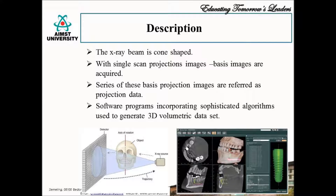The shape of the X-ray beam is that of a cone. As in CT scan, this scan image matrix is in the form of voxels. At the end of a single scan rotation of CBCT, images of the area of interest are generated. With this scan, projection images, i.e. basis images, are acquired, which are a digital three-dimensional map of the face.